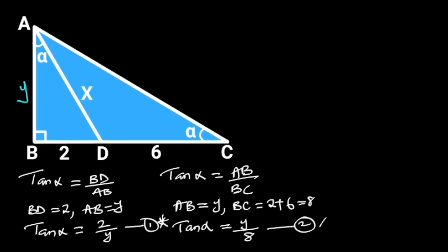Comparing equation 1 and 2, let's observe that their left sides are equal. Since the left sides of these two equations are equal, it follows that their right sides must be equal. So we can say that 2 over Y is equal to Y over 8.